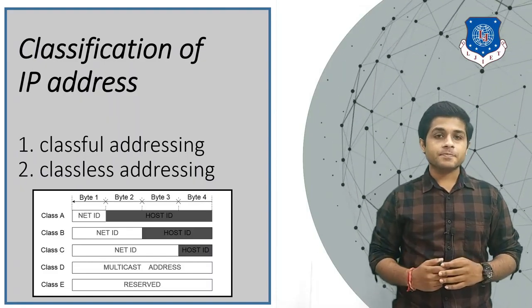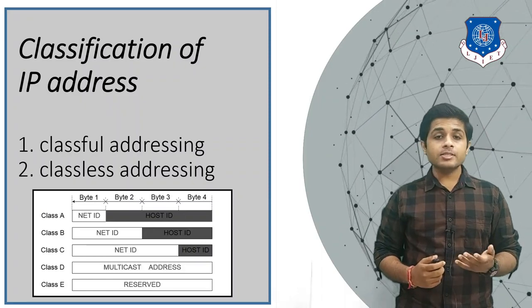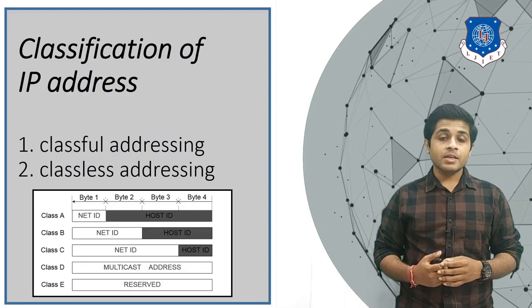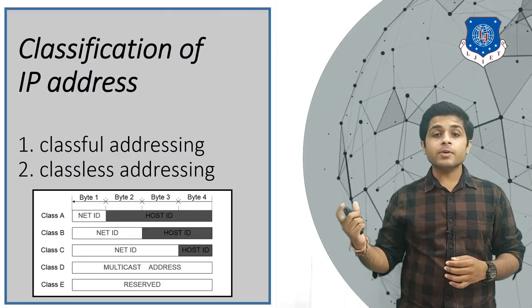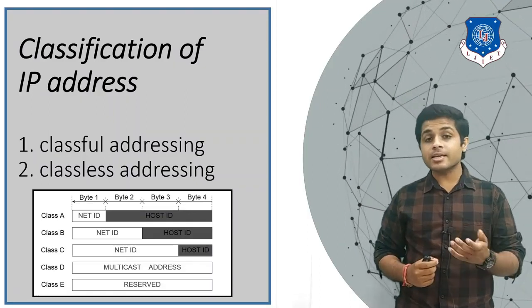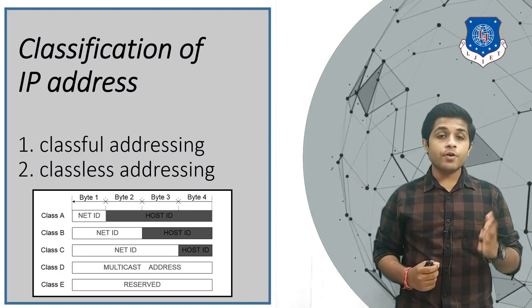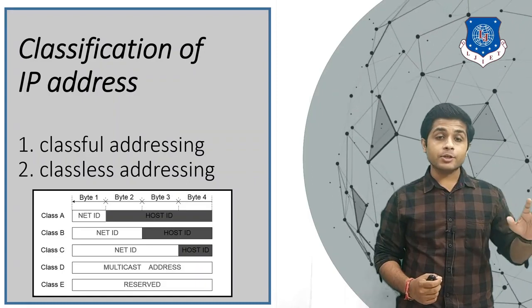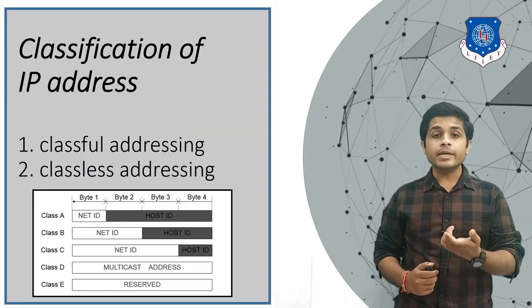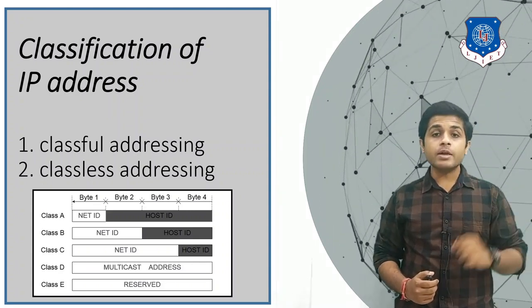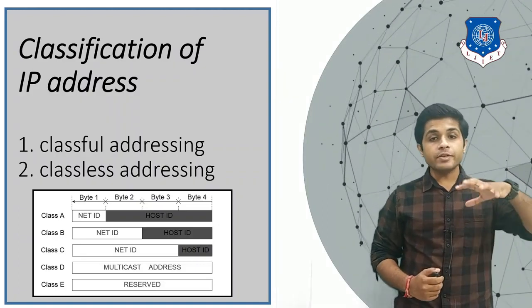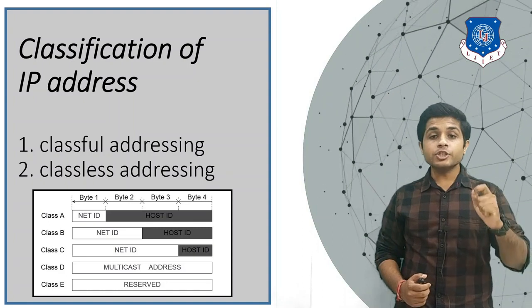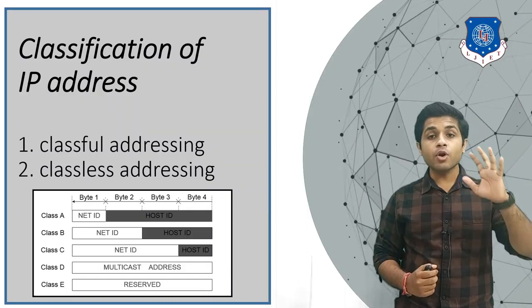In Class A, you can see two parts: network ID and host ID. The network ID represents how many networks are possible. In Class A, one byte (8 bits) is for network ID, so 2 raised to 8 means 256 individual networks are possible. From the host ID, you know how many devices are possible in one network. In Class A, 2 raised to 24 hosts are possible in one network.